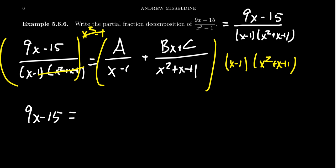On the right-hand side, you're going to get A times x squared plus x plus 1, and then add that to Bx plus C times x minus 1. Then we proceed to annihilate.